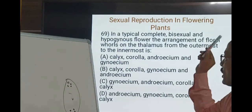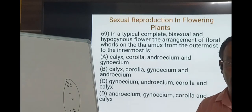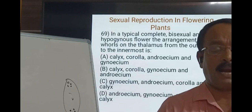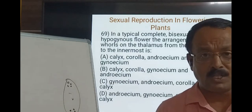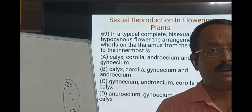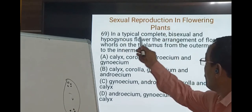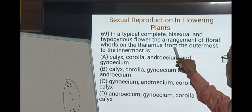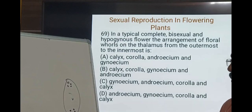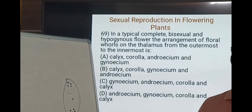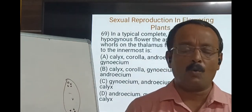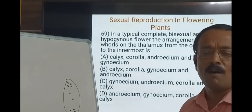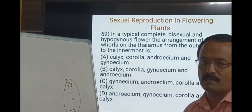The question is: in a typical complete bisexual and hypogynous flower — where all floral parts arise from the base of the ovary on the thalamus and the ovary is called superior — the arrangement of floral whorls on the thalamus from outermost to innermost is: the outermost whorl is the calyx, which contains sepals; the second whorl is the corolla, containing petals; the third whorl is the androecium, with individual segments called stamens; and the last whorl is the gynoecium, consisting of carpels. So calyx, corolla, androecium, and gynoecium is the correct answer.